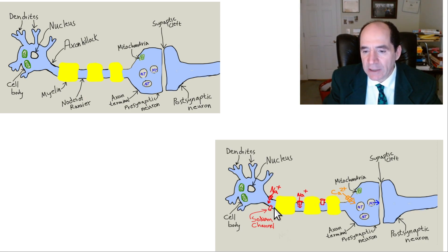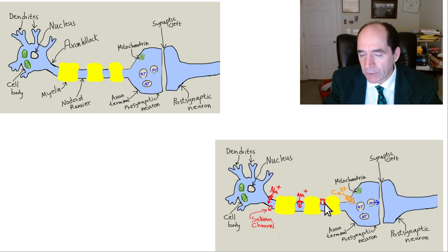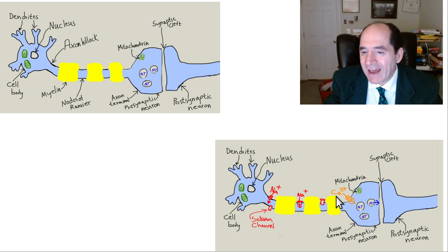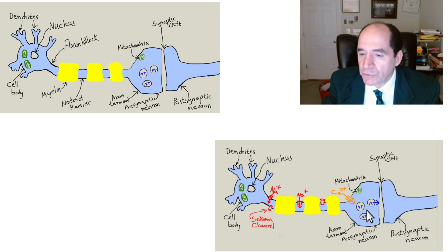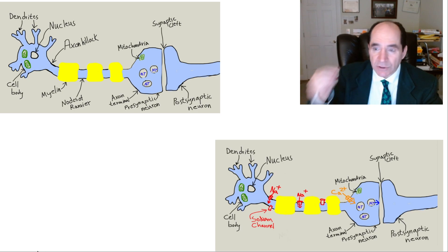The axon is wrapped in myelin — fat — which speeds up conduction. The gaps between the myelin wrapping are called nodes of Ranvier, and conduction jumps between these spots — called saltatory conduction, meaning to jump. The initial action potential is conducted through sodium channels, whereby sodium enters the cell and temporarily reverses the negative resting membrane potential — depolarization. Then a voltage-gated calcium channel opens at the synaptic terminal, calcium enters, and neurotransmitter vesicles merge with the membrane and diffuse across the cleft.